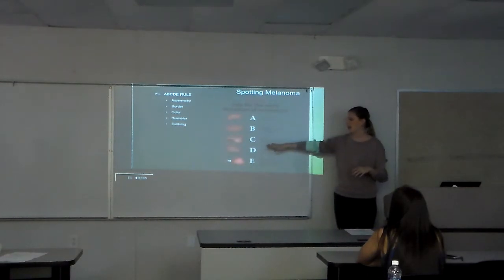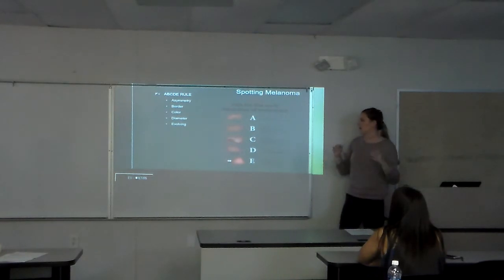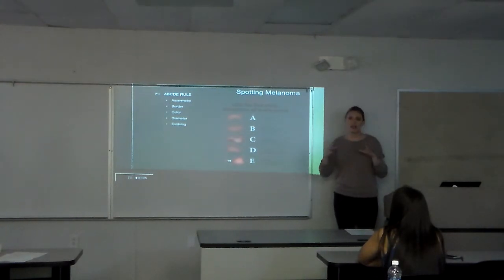C is for color: make sure it's all the same color. If there's any darkness, white spots, blue, or black, keep an eye on it. D is for diameter: you don't want it bigger than six millimeters. I know it's weird to measure a mole on your arm, but if it looks huge, get it checked out. E is for evolving: if you notice something new on your body that starts to change in size, shape, or color, definitely get it checked out.